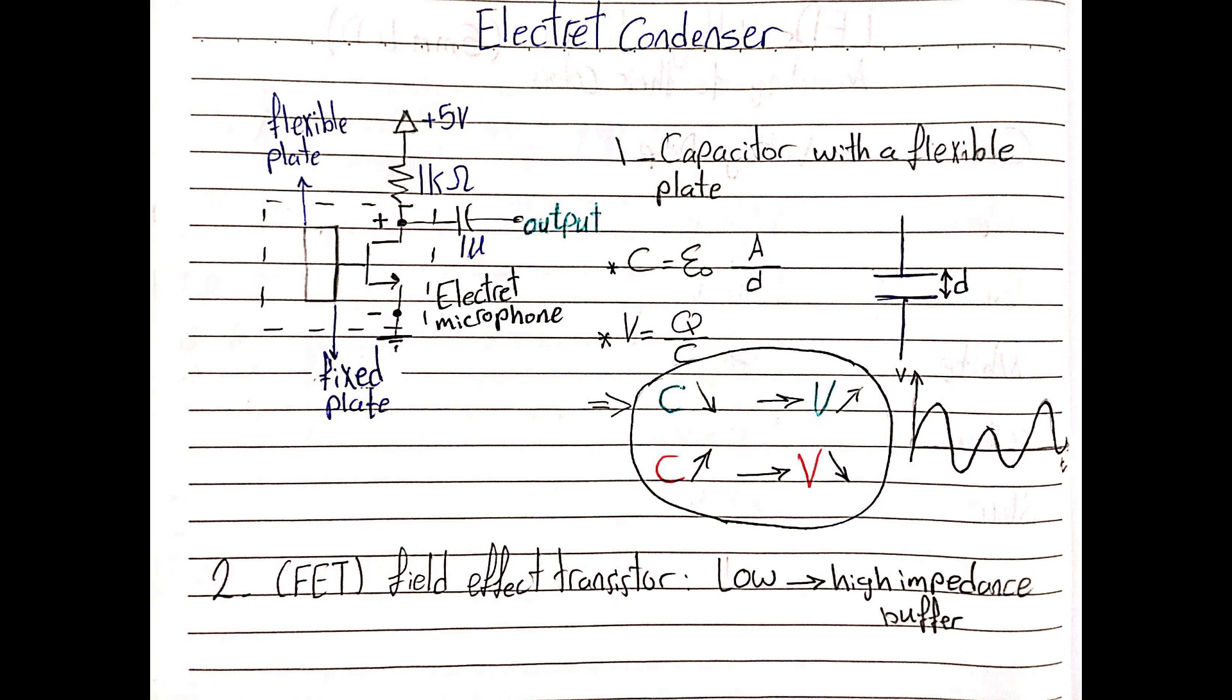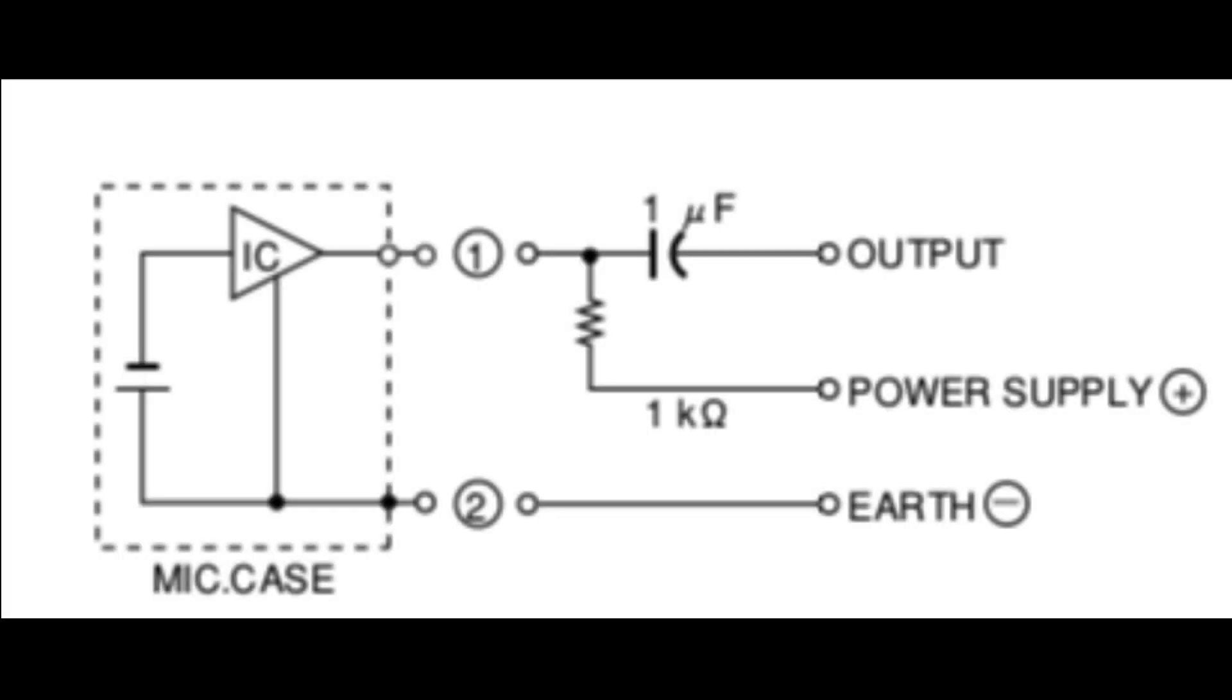But this voltage is so small due to the high impedance material mentioned before. That's why the fixed plate is connected to a field effect transistor to buffer the signal to the positive terminal from high impedance to low impedance. Now, to power the microphone, 5 volt supply is used with a pull up 1 kilo ohm resistor that's connected to the positive terminal of the microphone. One micro farad capacitor is also needed to block the DC voltage that's coming from the power supply, for a reason that will be explained later. Note that this setup is recommended by the data sheet of the electric microphone.